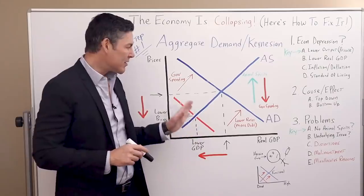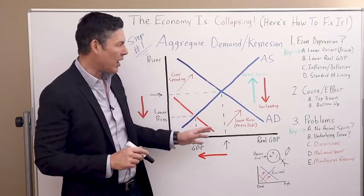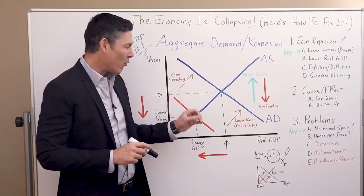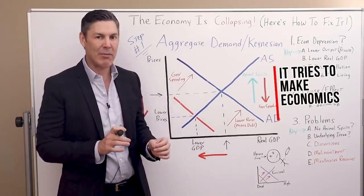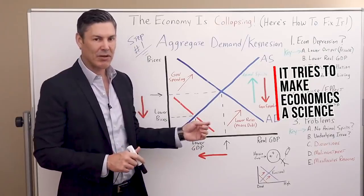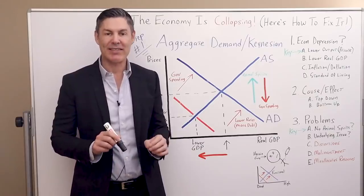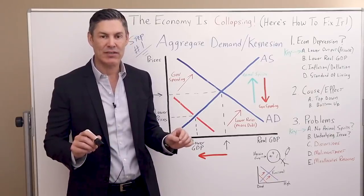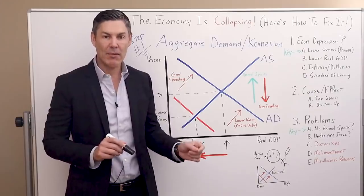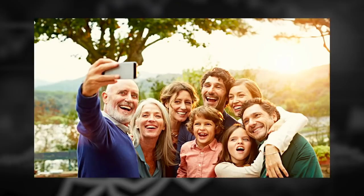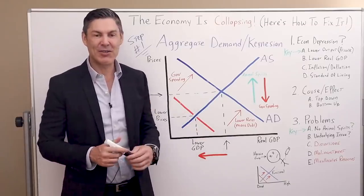I think the easiest way to picture this is that the aggregate supply-demand chart looks neat and tidy. In a way, it tries to make economics a science, and it works in a textbook. But in reality, this isn't how a complex system with billions of transactions a day — like our economy — actually works in real life. We are flawed, emotional human beings conducting those transactions, and you can't just simplify it into a chart.